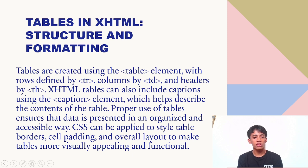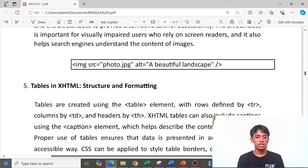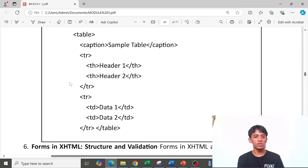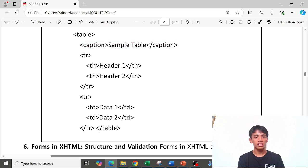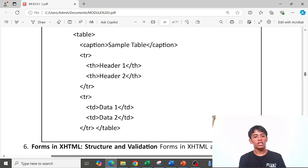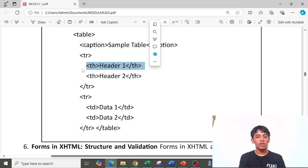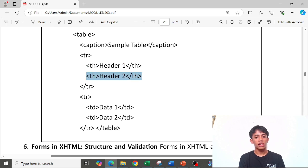CSS can be applied to style table borders, cell padding, and overall layout to make tables more visually appealing and functional. In this code example: the table tag, the caption tag with 'sample table', the table row tr, the table header th tags applied first, then our table data td which contains the data, and finally the closing tr and table tags.